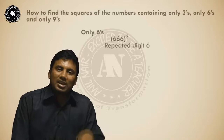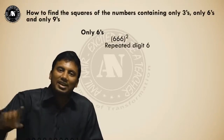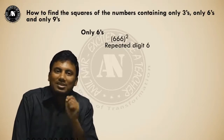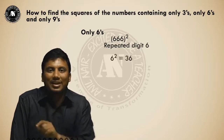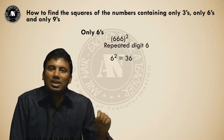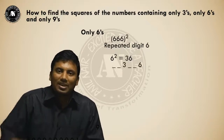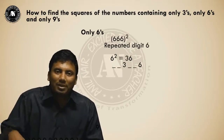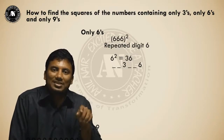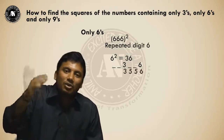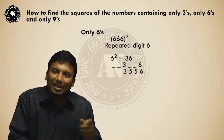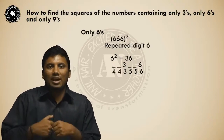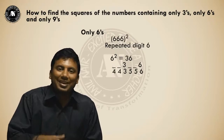Now apply the same pattern to sixes. For 666 squared: the repeated digit is six, and six squared is 36. Three sixes are there, so put two slashes before 6 and two slashes before 3. Subtract one from 6 to get 5 — giving two fives. Add one to 3 to get 4 — giving two fours. So 666 squared equals 443556, that is two fours, three, two fives, six.